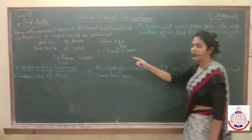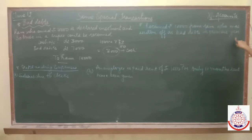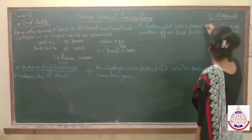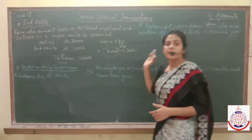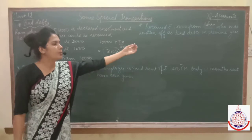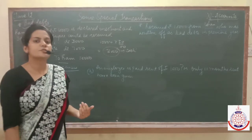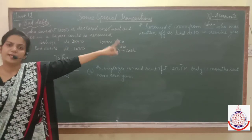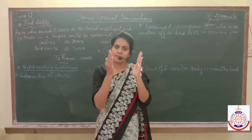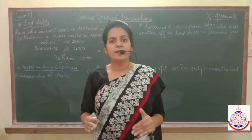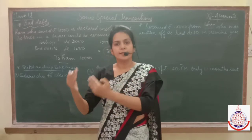Now the next case — let's call him Rohan instead to avoid confusion. Received rupees 10,000 from Rohan, who was written off as bad debts in the previous year. What is happening here: Rohan was our debtor, and last year he refused to make payment, so he became bad debts. But in the current year, he paid rupees 10,000 to us. This means Rohan, who was declared bad debts, has now become bad debts recovered.